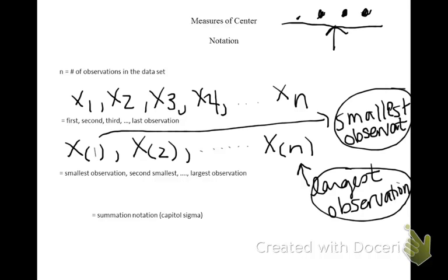If we want to sum the numbers in a data set, we could say the word add, or a shortcut is to just write a sigma. This is capital sigma. Lowercase sigma looks like this — that's our standard deviation. We're talking uppercase sigma right here, and all it means is to add. This is the correct way that sigma should look.